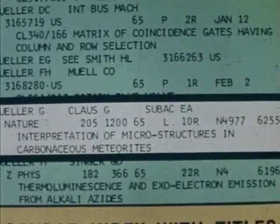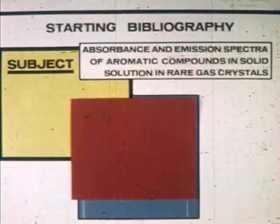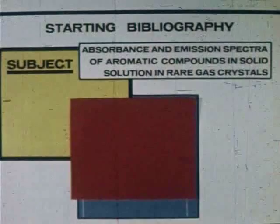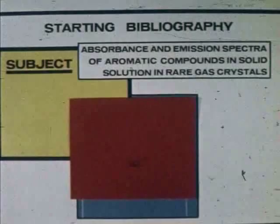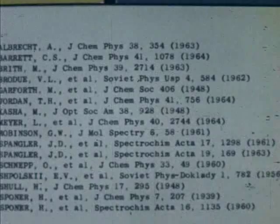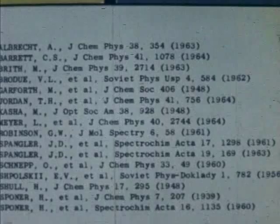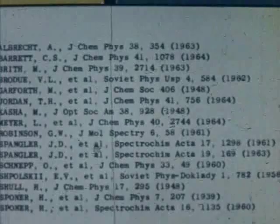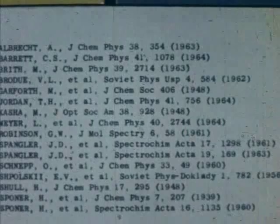Consider an example from a different field. Suppose we would like to compile a rather comprehensive bibliography of recent papers on the topic: absorbance and emission spectra of aromatic compounds in solid solution in rare gas crystals — a subject on which there is quite a bit of literature. A knowledgeable person in this field would ordinarily have a list of older starting references from his reprint collection or from a search in the permuterm index, chemical abstracts, or physics abstracts. Having obtained this list, he could enter the SCI with one or more of these references. However, let us assume that the only paper at hand is one found recently by scanning Current Contents — a paper by Diamant concerning the near-ultraviolet spectra of benzene in inert solid solution.